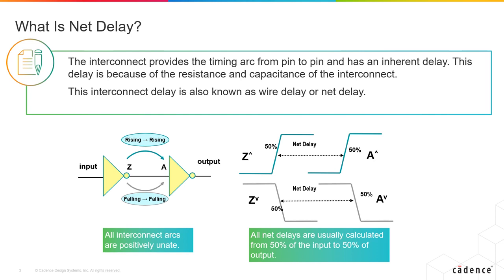The net delays are calculated typically from 50% of the input to 50% of the output. It is important to notice that all these interconnects are naturally positively unate. The timing arcs of the nets connect the timing arcs of the cells to form a timing path, which is then verified against any given requirements to make sure your design works.